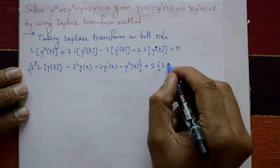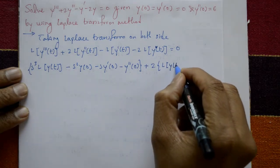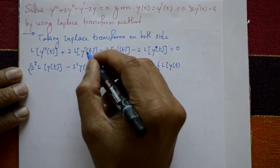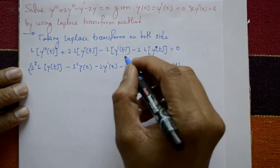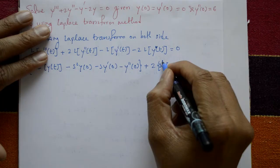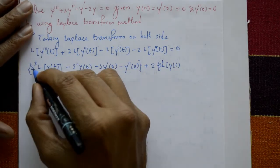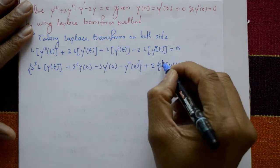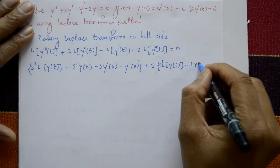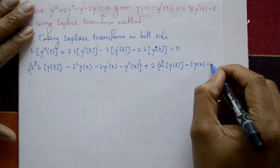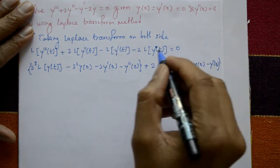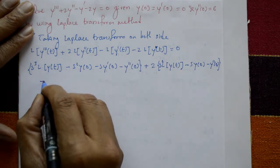The second term: 2·L{y''(t)} = 2·[s²·L{y(t)} - s·y(0) - y'(0)].